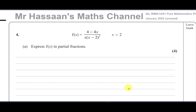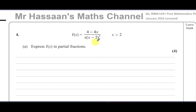For part A, they ask us to express this in partial fractions. So they've told us to take f of x, where x is greater than 2, and we have to express this in partial fractions — meaning we have to do the opposite of adding fractions together; we have to split them apart and express them as separate fractions. We have to be careful because we have what's called a repeated root here.